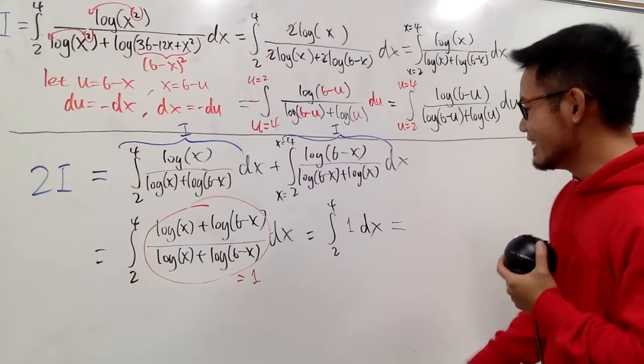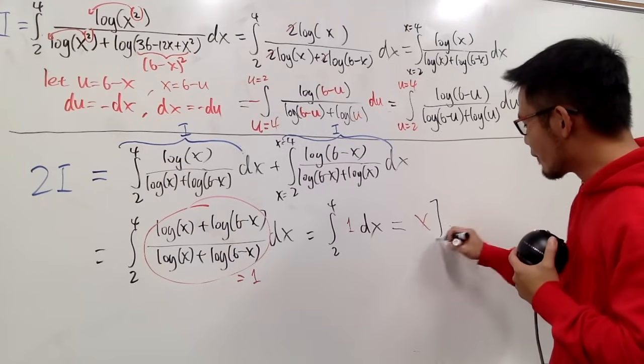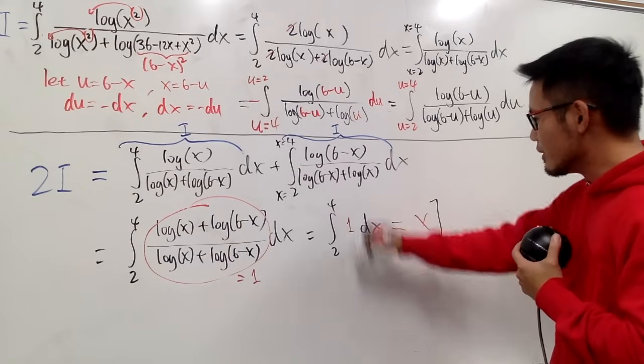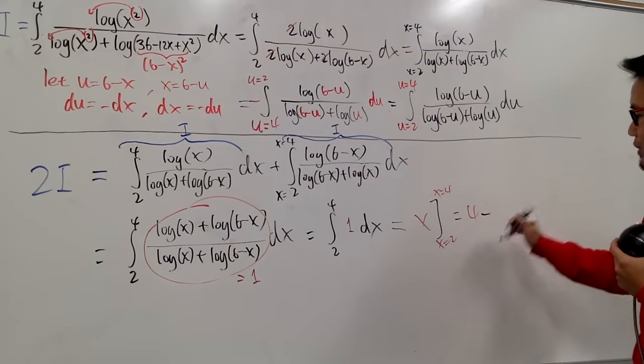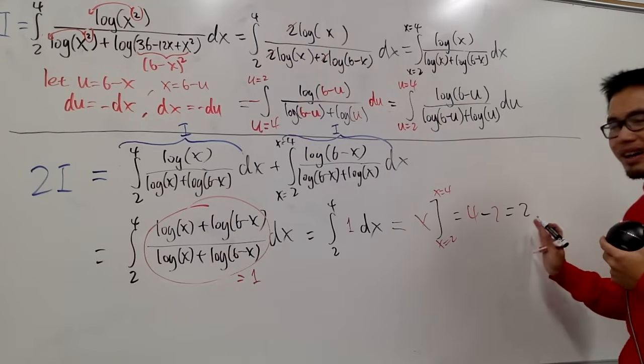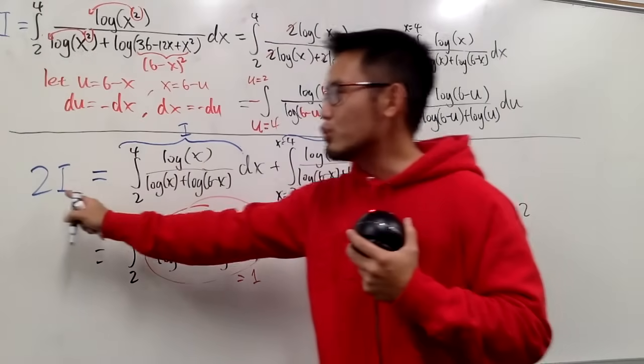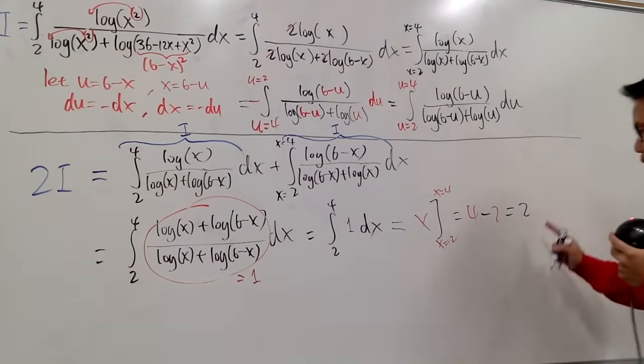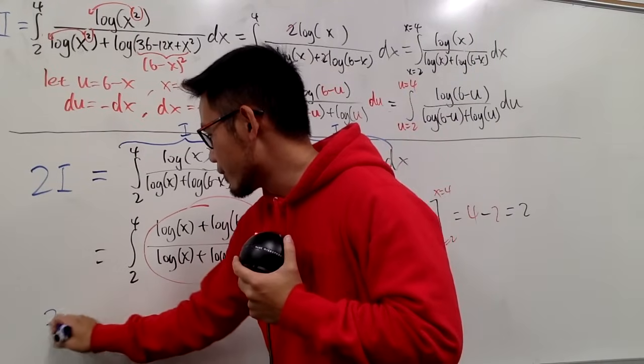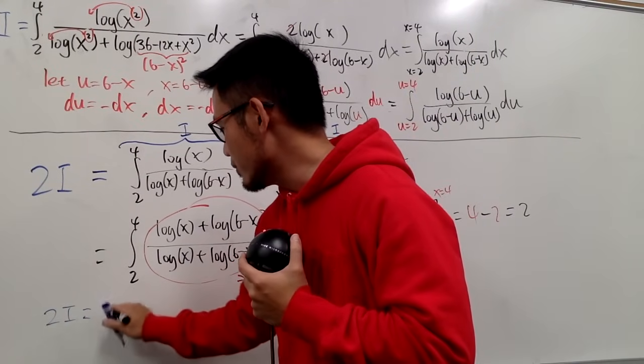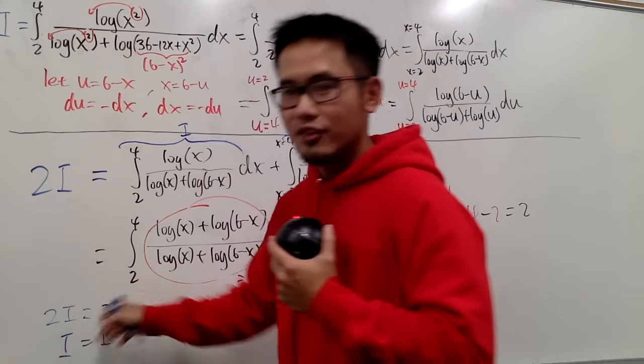And now, what's the integral of 1 in the x world? It's just x, right? And then this is going from x equals 2 to x is equal to 4. So in another word, we're just doing 4 minus 2. So the answer to this part is just 2. But is this the answer? No, because what I'm saying is 2I is equal to 2, right? So I will write this down: we have 2I equals to 2. Therefore, I has to be equal to 1 after we divide both sides by 2.